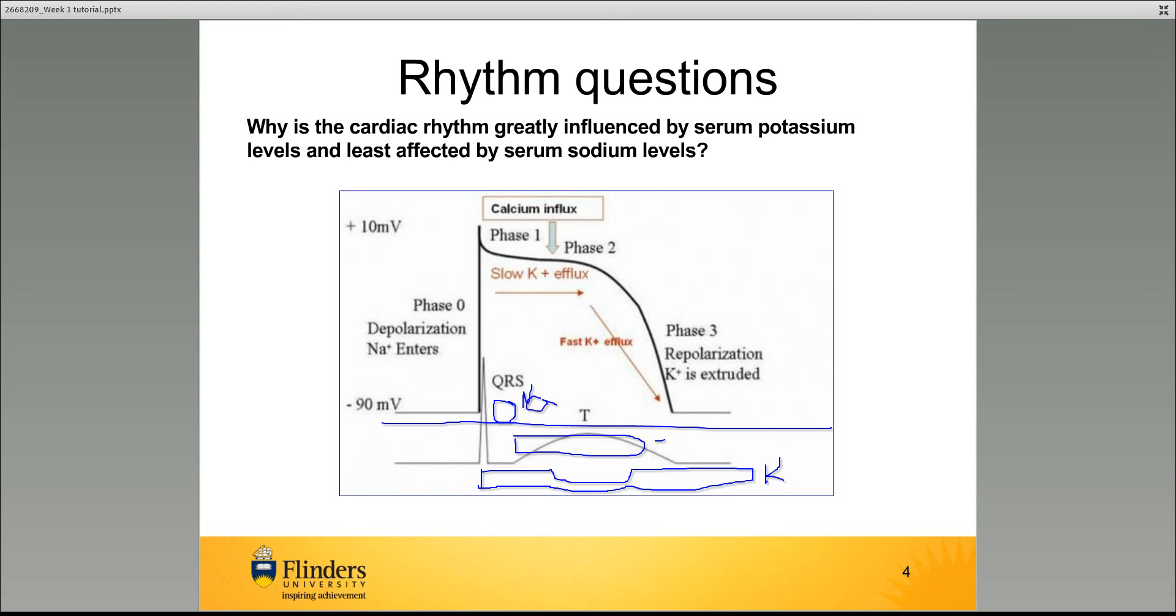Hence the question is: why is the cardiac rhythm greatly influenced by serum potassium levels and least affected by serum sodium levels? Because it does affect the action potential so much, in clinical practice we check the potassium quite regularly. If we have low potassium, the action potential becomes shorter. Low potassium will make this a shorter time frame, and that can lead to excitability and ventricular arrhythmias.